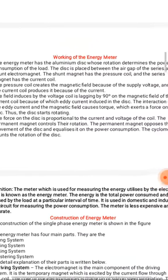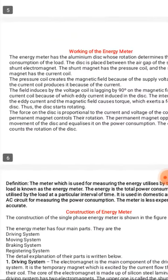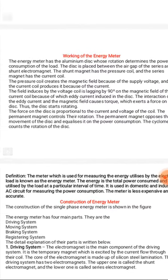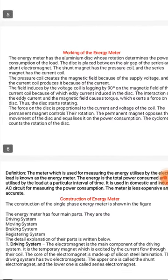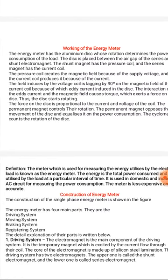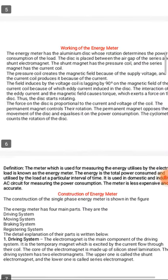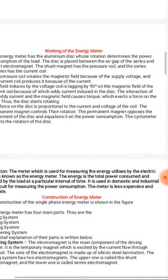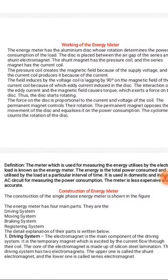The disc is placed between the air gap of the series and shunt electromagnet. The shunt magnet has the pressure coil and the series magnet has the current coil. The pressure coil creates the magnetic field because of the supply voltage and the current coil produces it because of the current. The field induced by the voltage coil is lagging by 90 degrees on the magnetic field of the current coil, because of which eddy current is induced in the disc. The interaction of the eddy current and the magnetic field causes torque which exerts a force on the disc. The disc starts rotating.